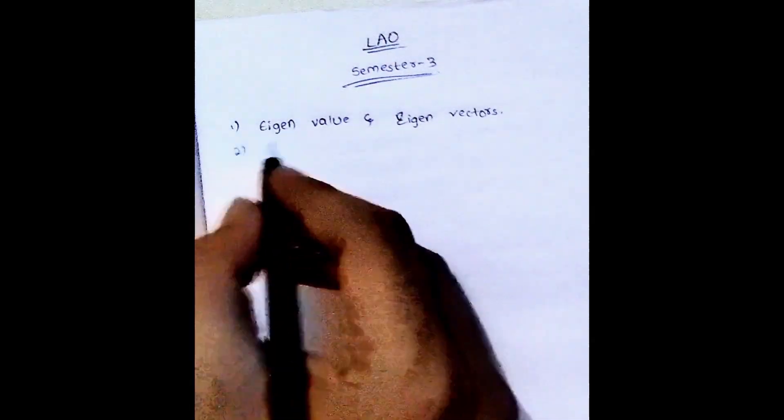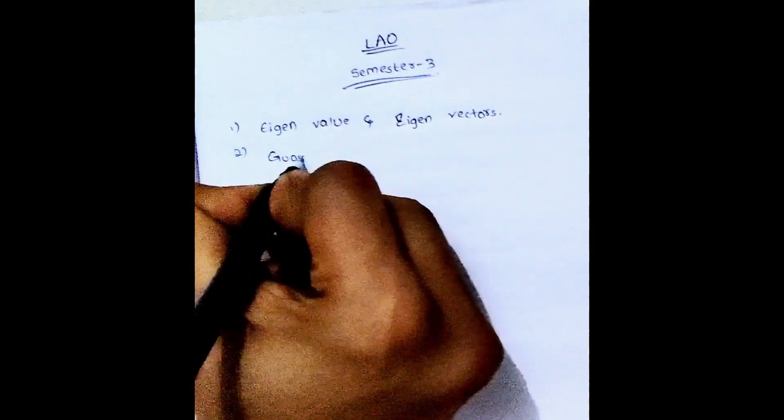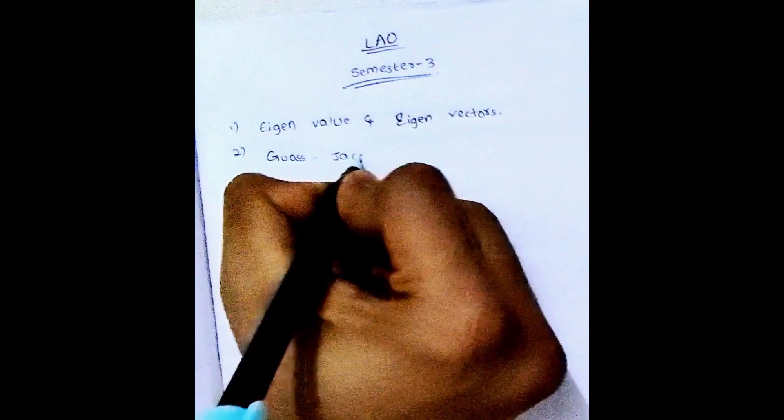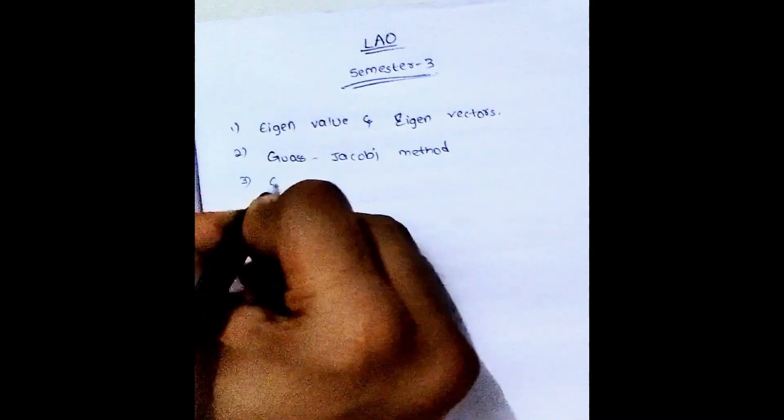And next topic is iterations. Like in iterations, we have two methods. What is the Gauss-Jacobi method? Gauss-Jacobi method. And another one is Gauss-Seidel method.